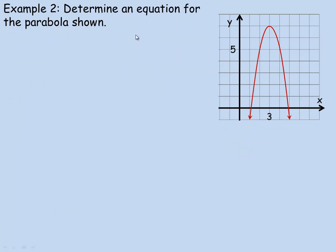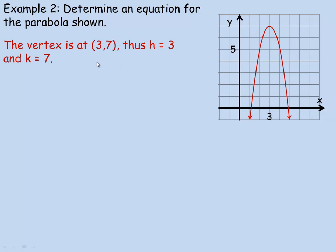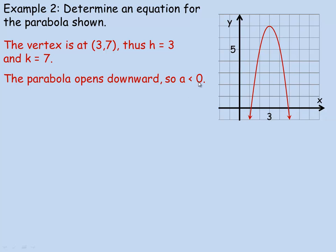Flipping over to Example 2, it says determine an equation for the parabola shown. The vertex is at the point (3, 7). So in vertex form, h would be 3 and k would be 7. Another characteristic is that the parabola opens down, so the a-value would have to be negative. In the general vertex form, we can put 3 in place of h and 7 in place of k. We still have to find what a is.